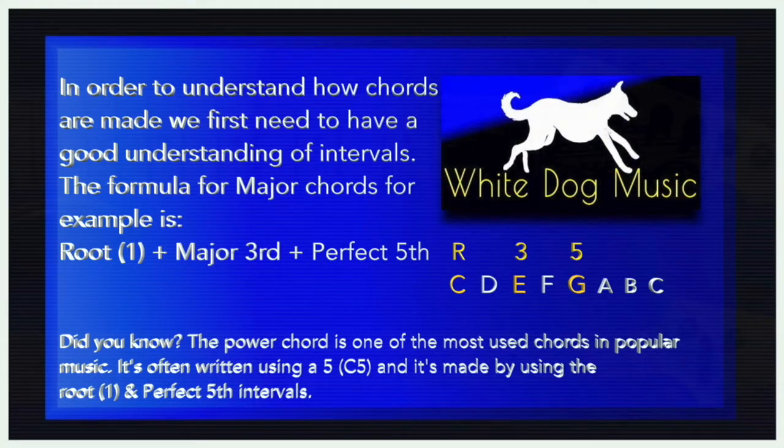In order to understand how chords are made, we first need to have a good understanding of intervals. The formula for a major chord, for example, is root (1) plus the major third plus the perfect fifth. Here you can see that in the C chord, the root is C, the third is E, and the fifth is G. So any C chord would be made up of C, E, and G.